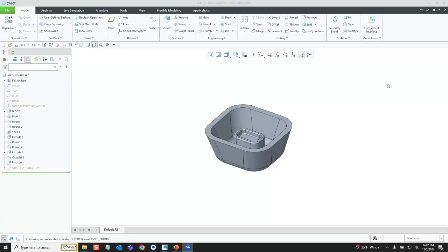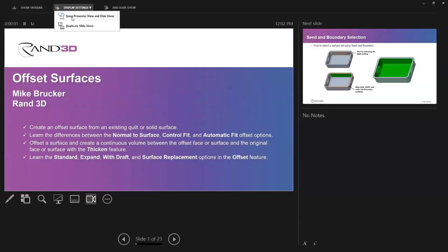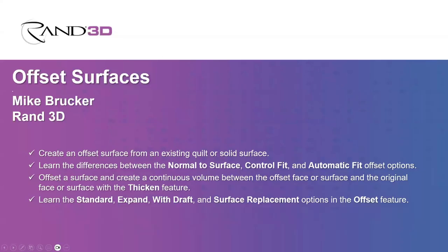So let's start with my screen. Before I go any further, can somebody confirm you can see my Creo screen and the audio is good? The offset is going to take a surface — that could be part of a quilt or part of your solid geometry — and make a new surface offsetting away from the existing one. Besides doing that standard offset, we're going to see there's lots of other options inside of that particular feature.